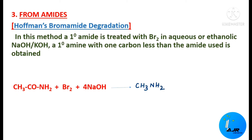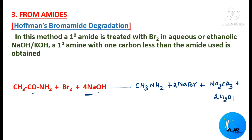The products are: CH3NH2, plus 2 NaBr (sodium combines with bromine), plus Na2CO3 (sodium carbonate), plus 2 molecules of water. The product primary amine has only one carbon atom, whereas the primary amide used had two carbon atoms. Since there is a degradation in the number of carbon atoms, this method is called Hoffmann's Bromamide Degradation process.